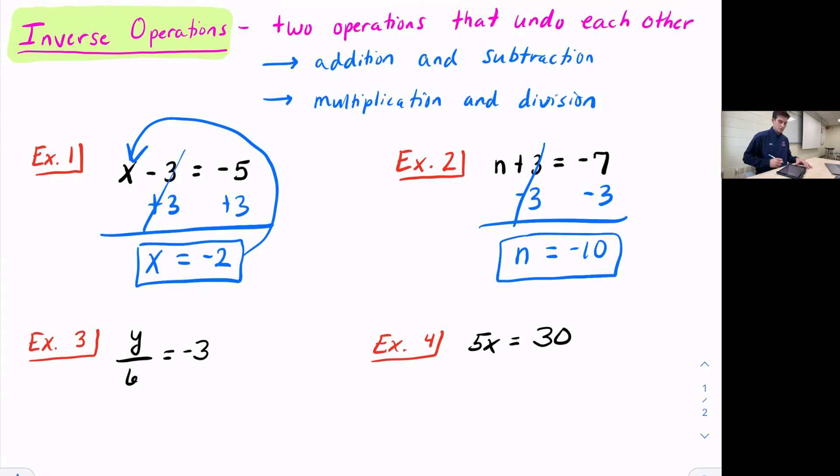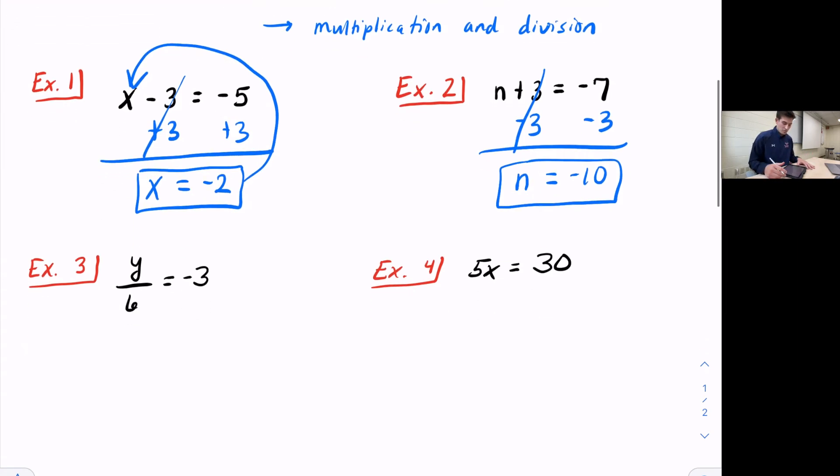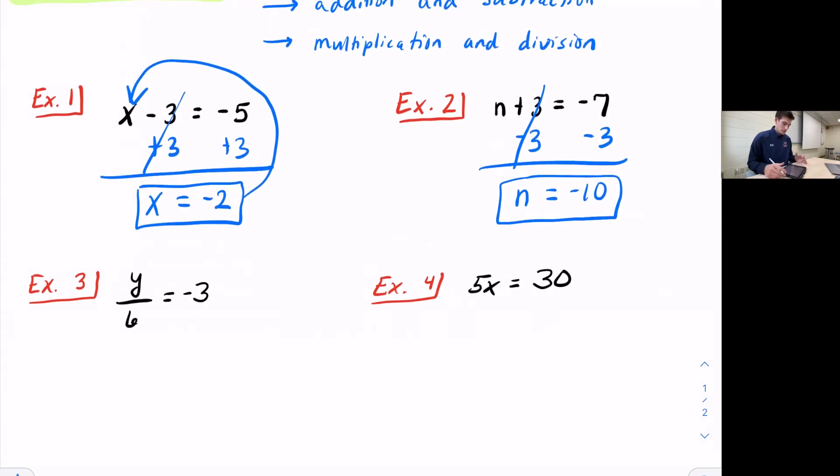Okay, so those first two examples we worked with addition and subtraction as inverse operations, and now we'll look at multiplication and division. So example three, we have y divided by six equals negative three.